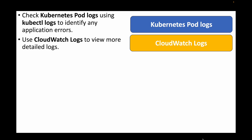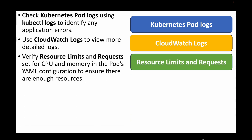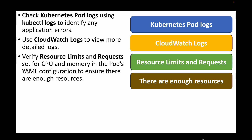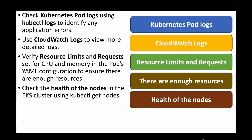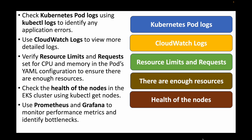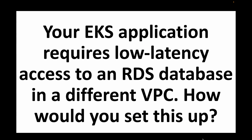We can also make use of CloudWatch Logs for more detailed log information. We can verify the resource limits and requests set for CPU and memory in the pod configuration to ensure the pod has enough resources to run. We can check the health of the nodes using the kubectl get nodes command, and use tools like Prometheus and Grafana to monitor performance metrics and identify any bottlenecks.